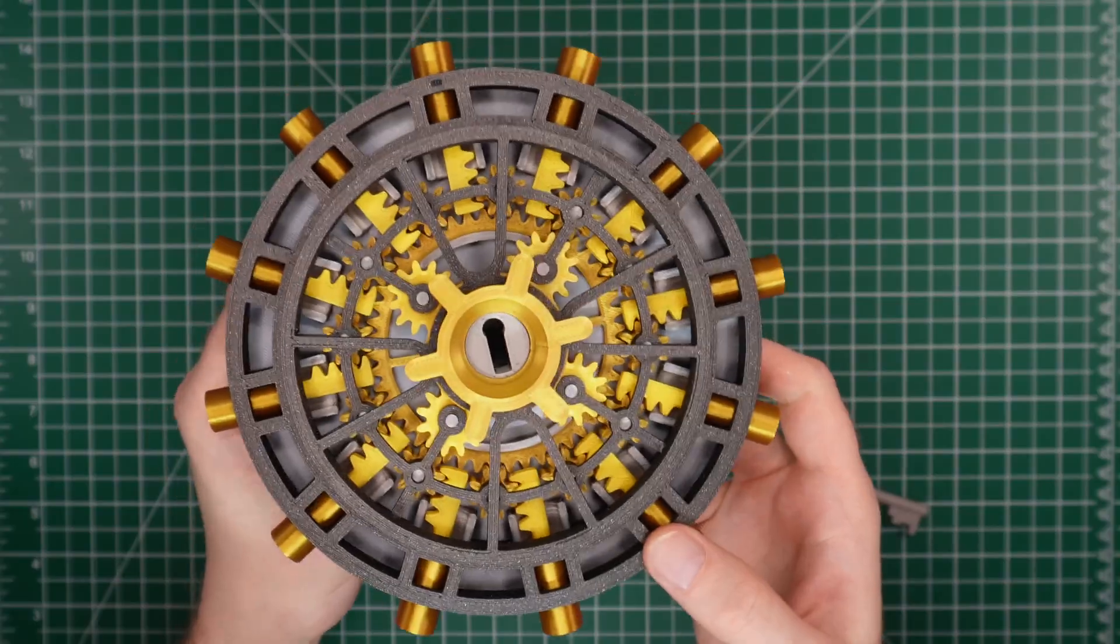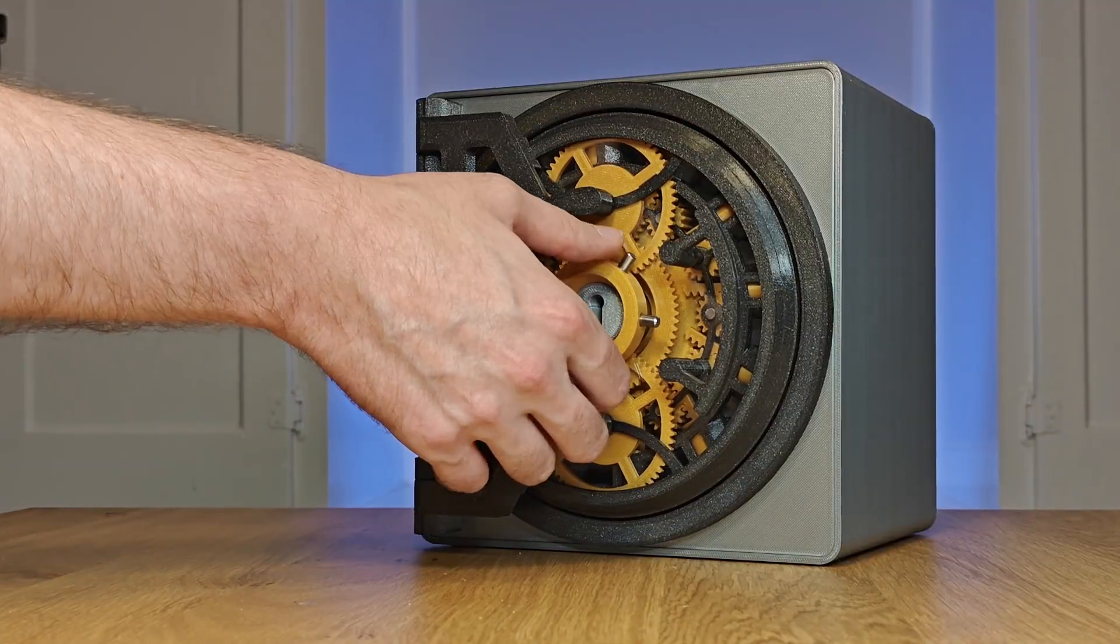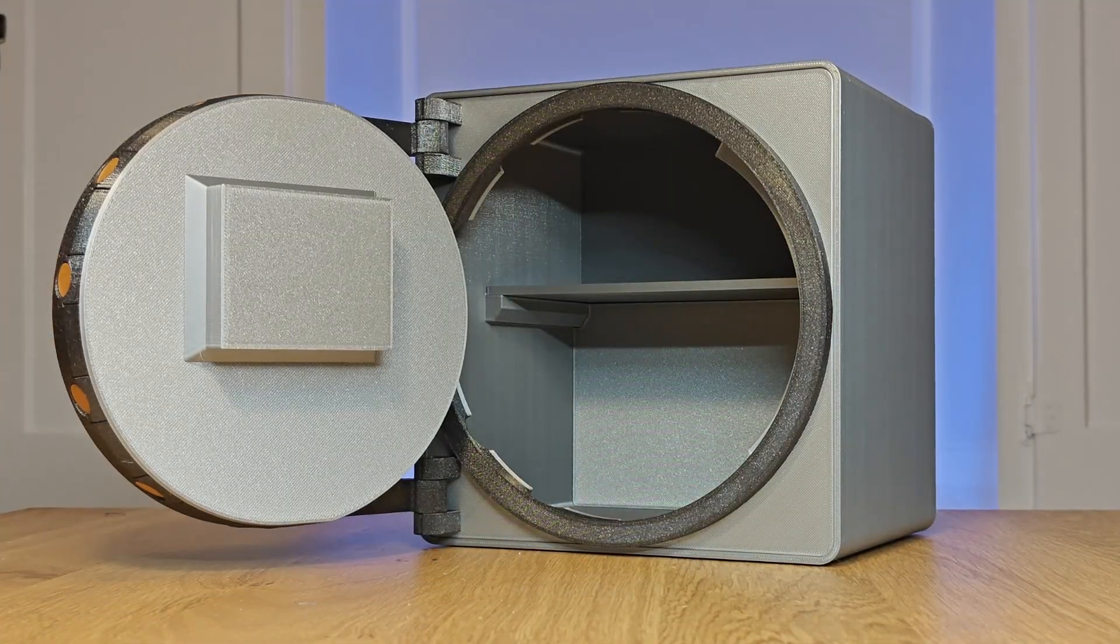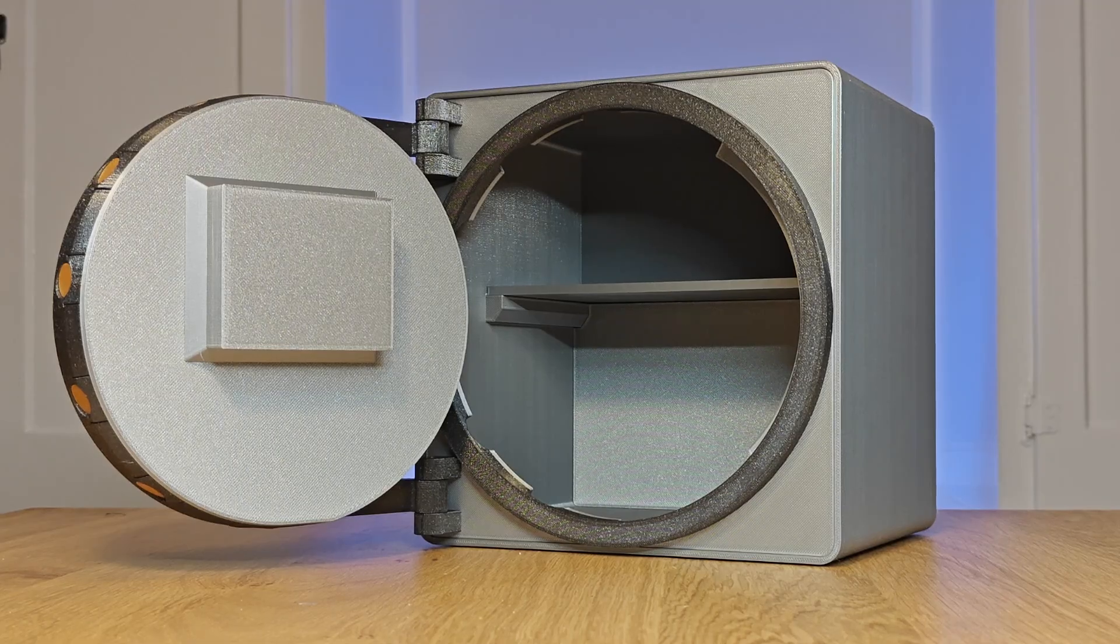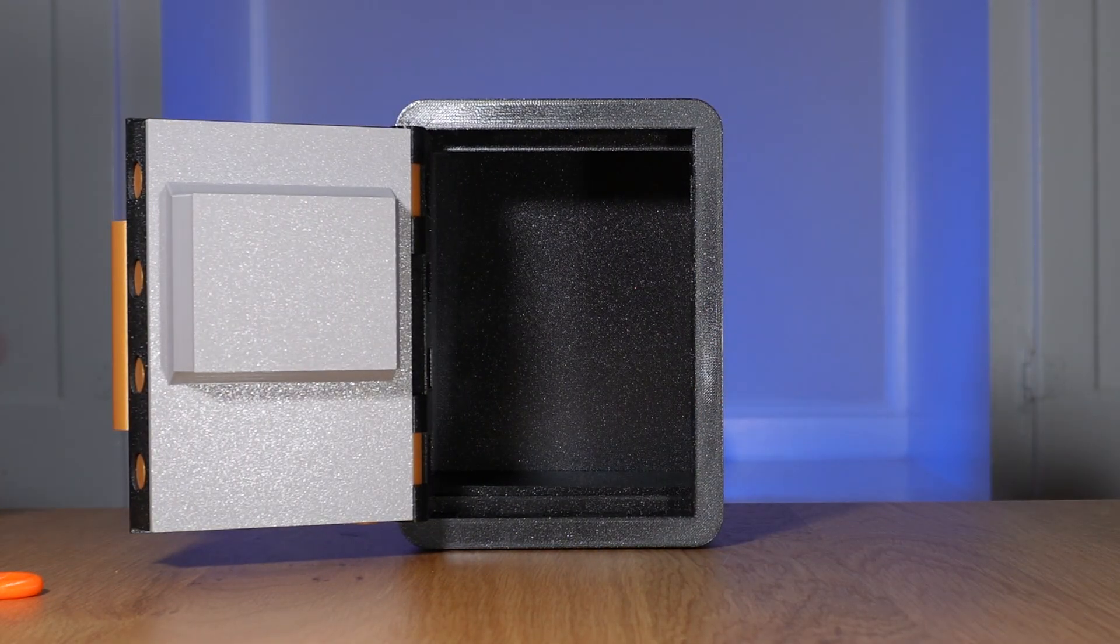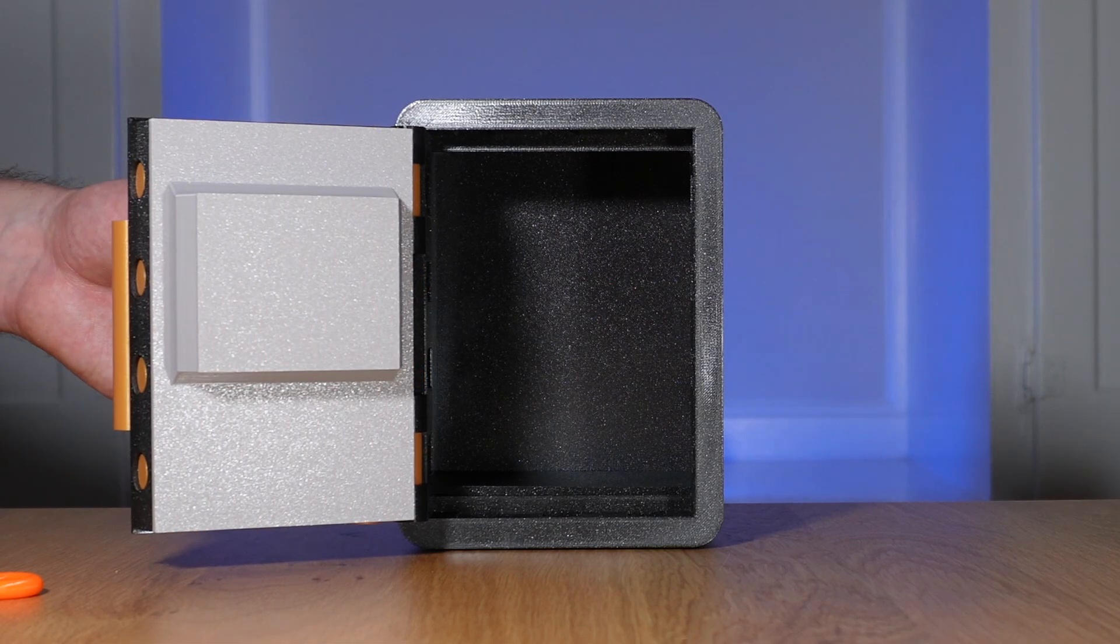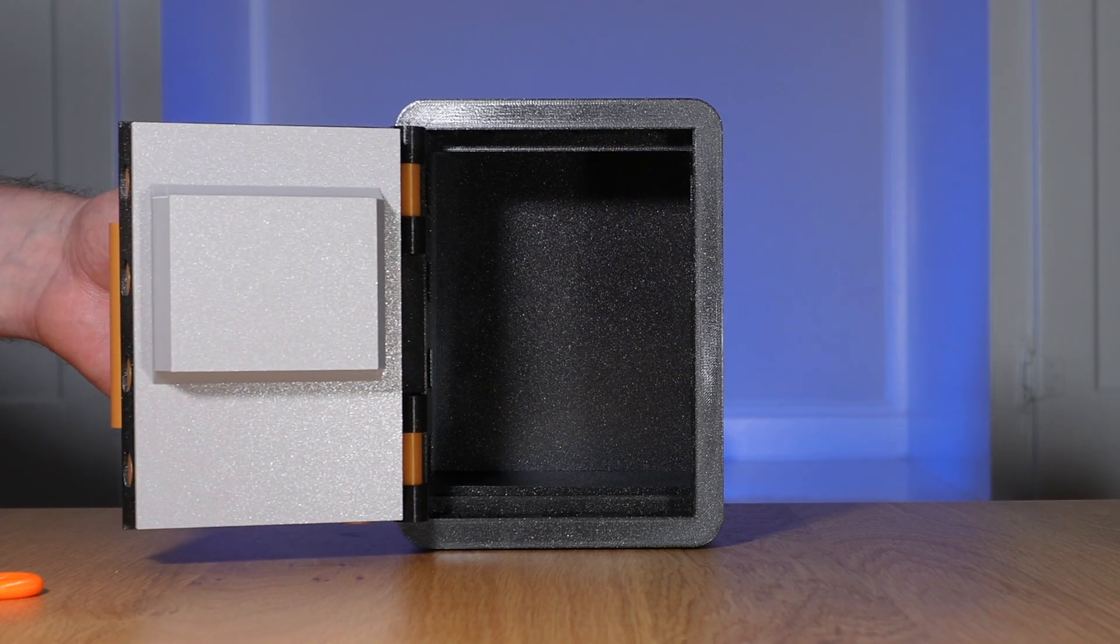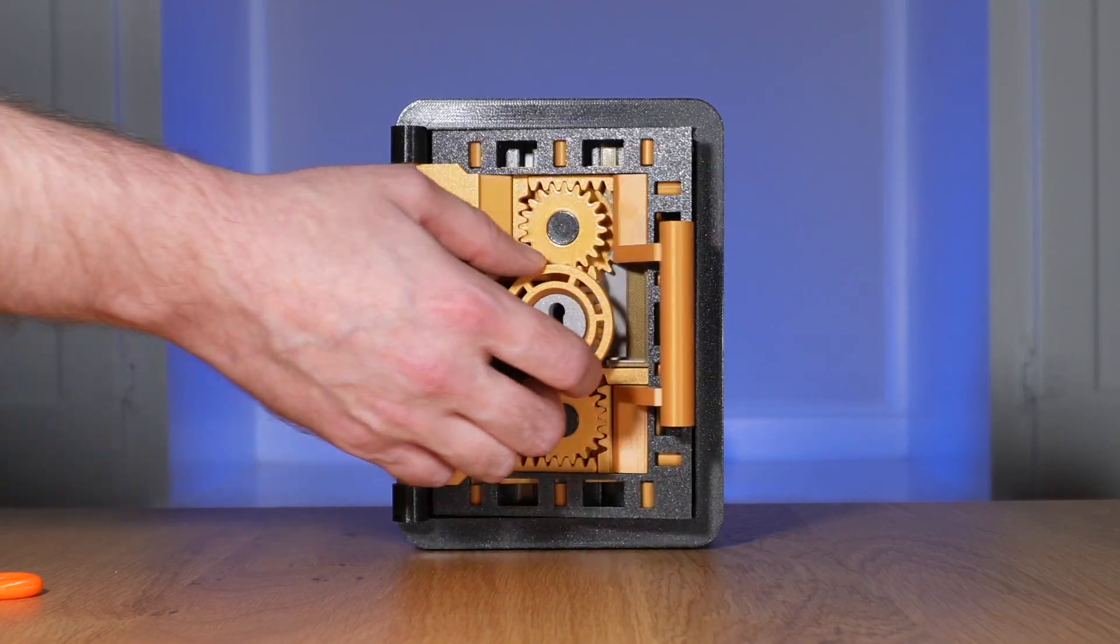Although this design ultimately failed, the lock itself operated pretty well, so I redesigned the vault mechanism which turned into my last project. In this iteration, I reused the locking mechanism but opted for a rectangular door design with only three gears. This adjustment significantly enhances the smoothness of the locking mechanism.